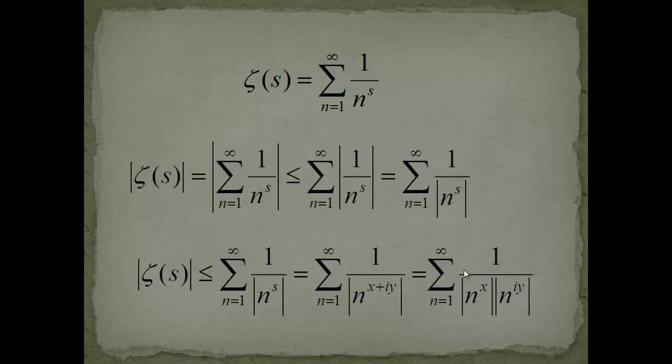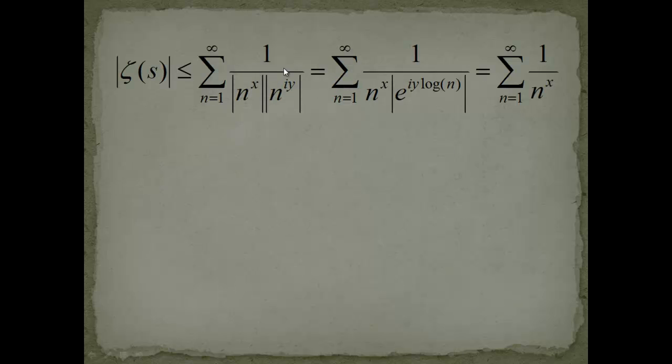Now we have this written down here. Now the first part is pretty simple. If you have a natural number and you take it to some real number, what will happen is you will always end up having a real number again. So this is just an exponential function which only takes positive real numbers. The right hand side is a little bit harder to understand, but we will do a little step in order to understand better. So this is what we had before. And I'm just writing this n to the i y as an exponential, e to the i y logarithm of n.